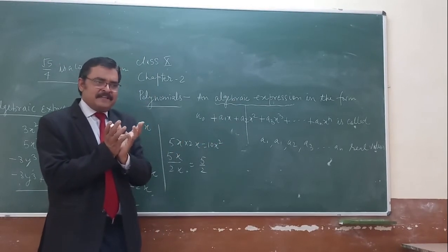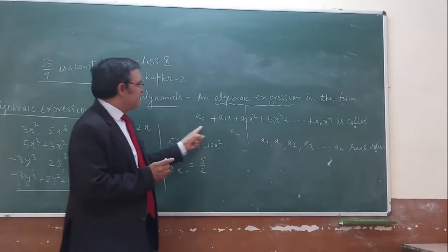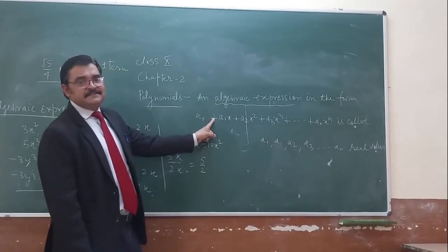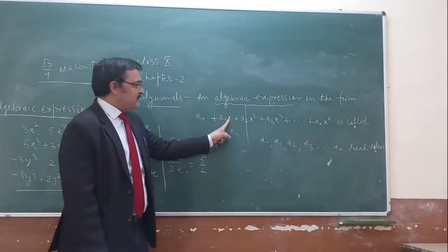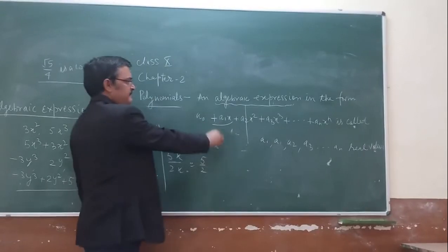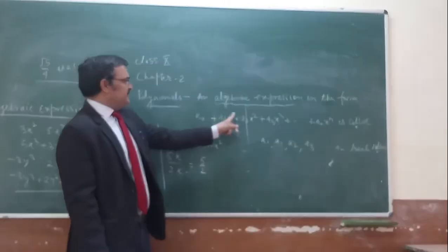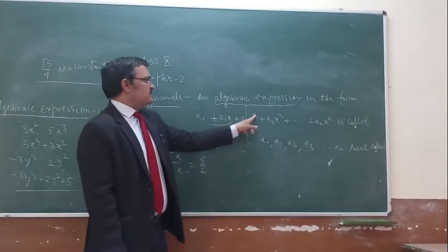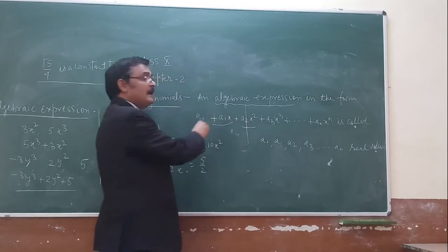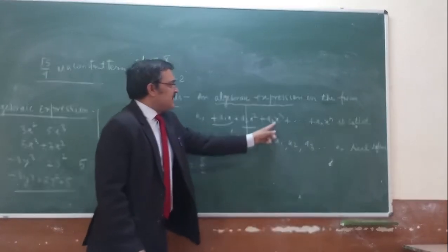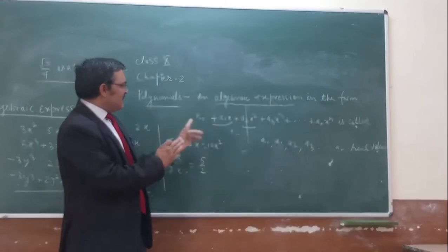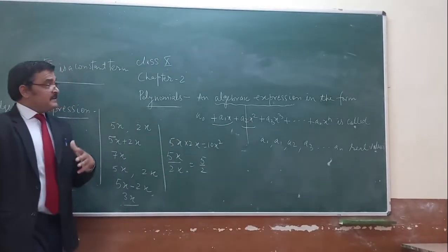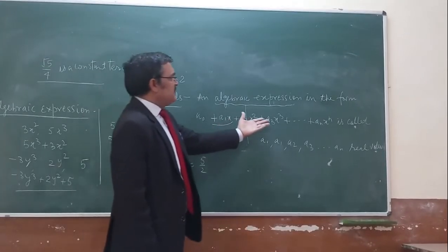We check the definition of polynomial using this algebraic expression form. Any algebraic expression which can be written in this form is known as a polynomial. The powers of the variables — 0, 1, 2, 3 — must be non-negative integers for the expression to be a polynomial.